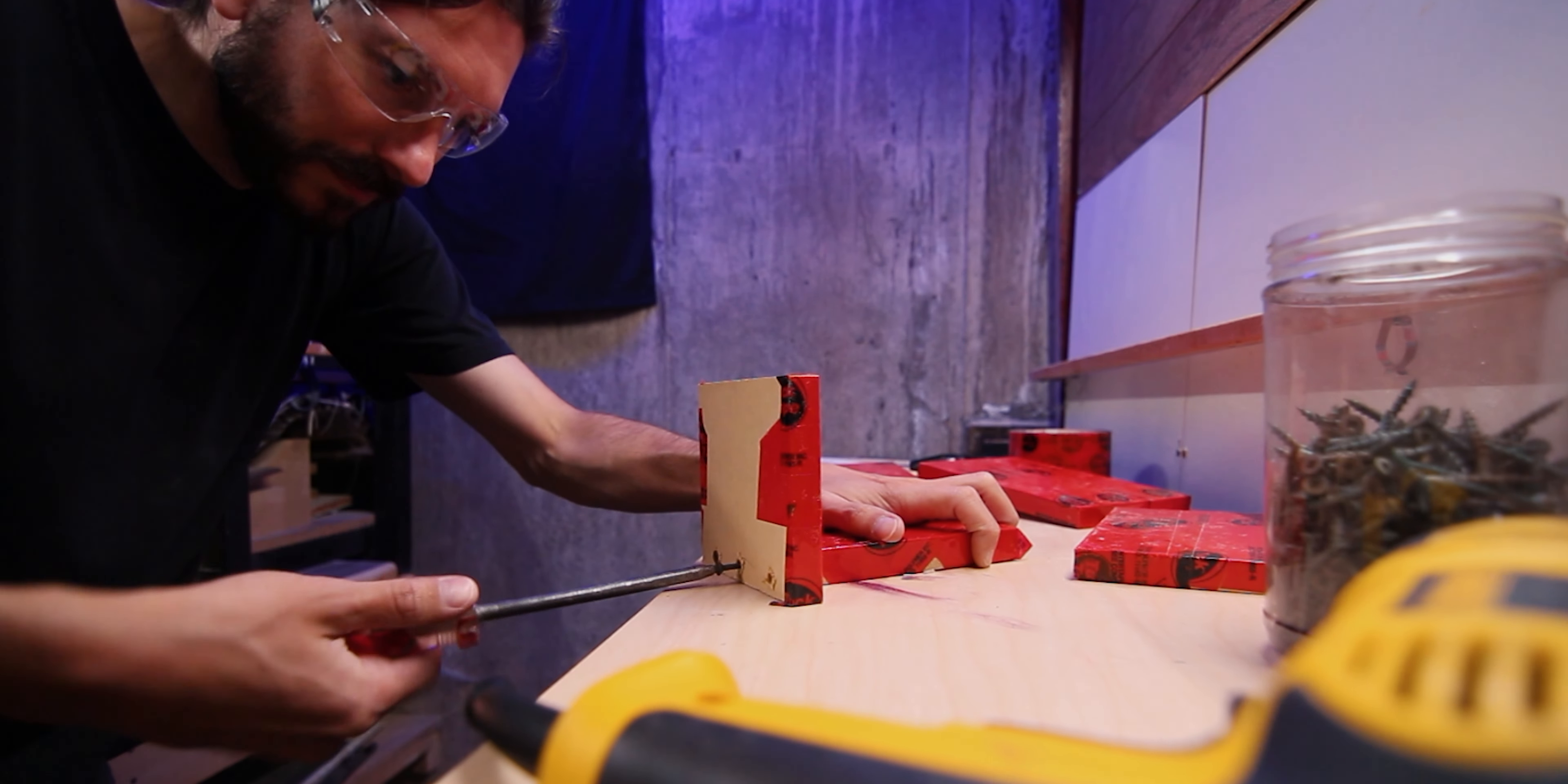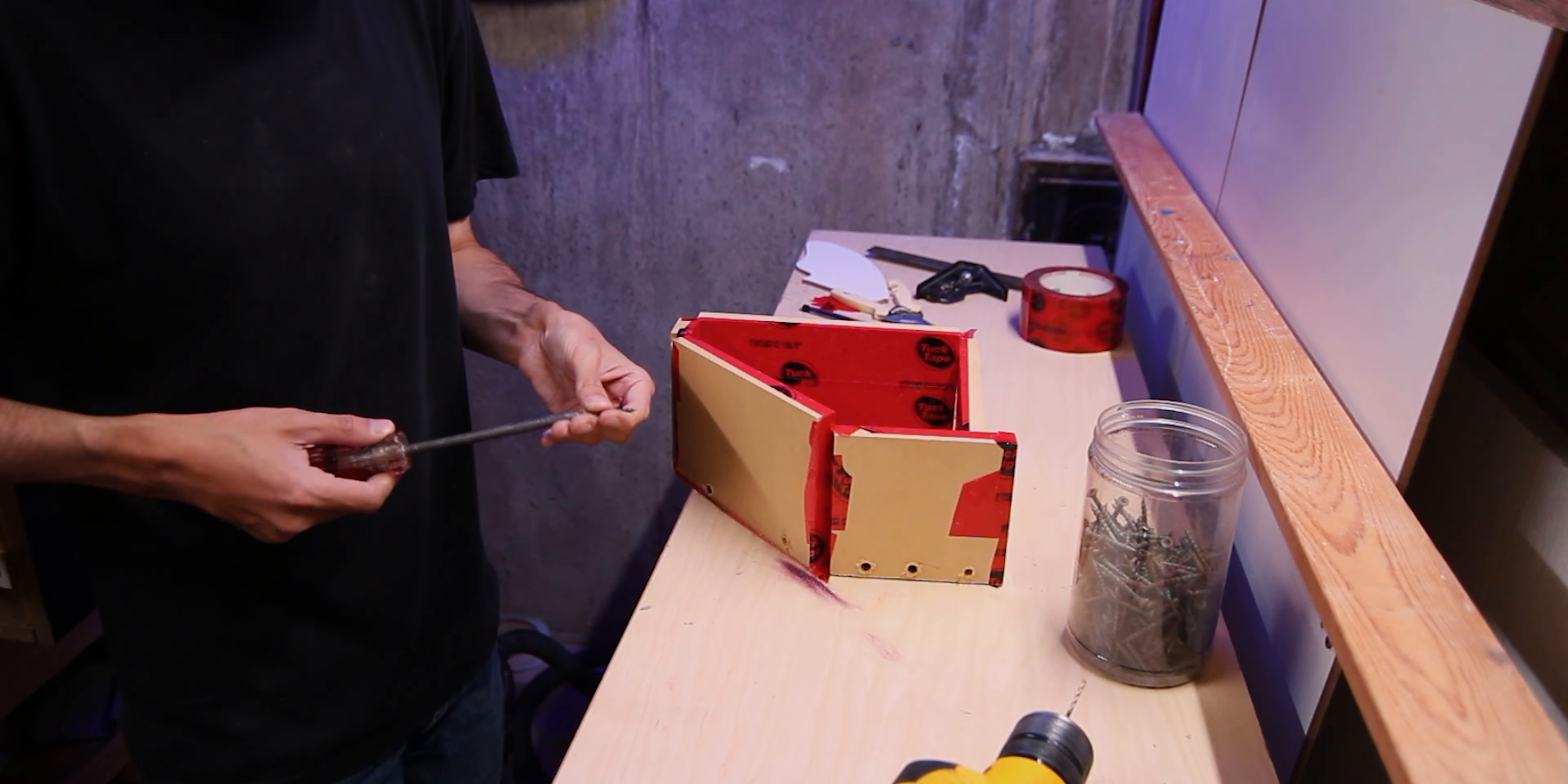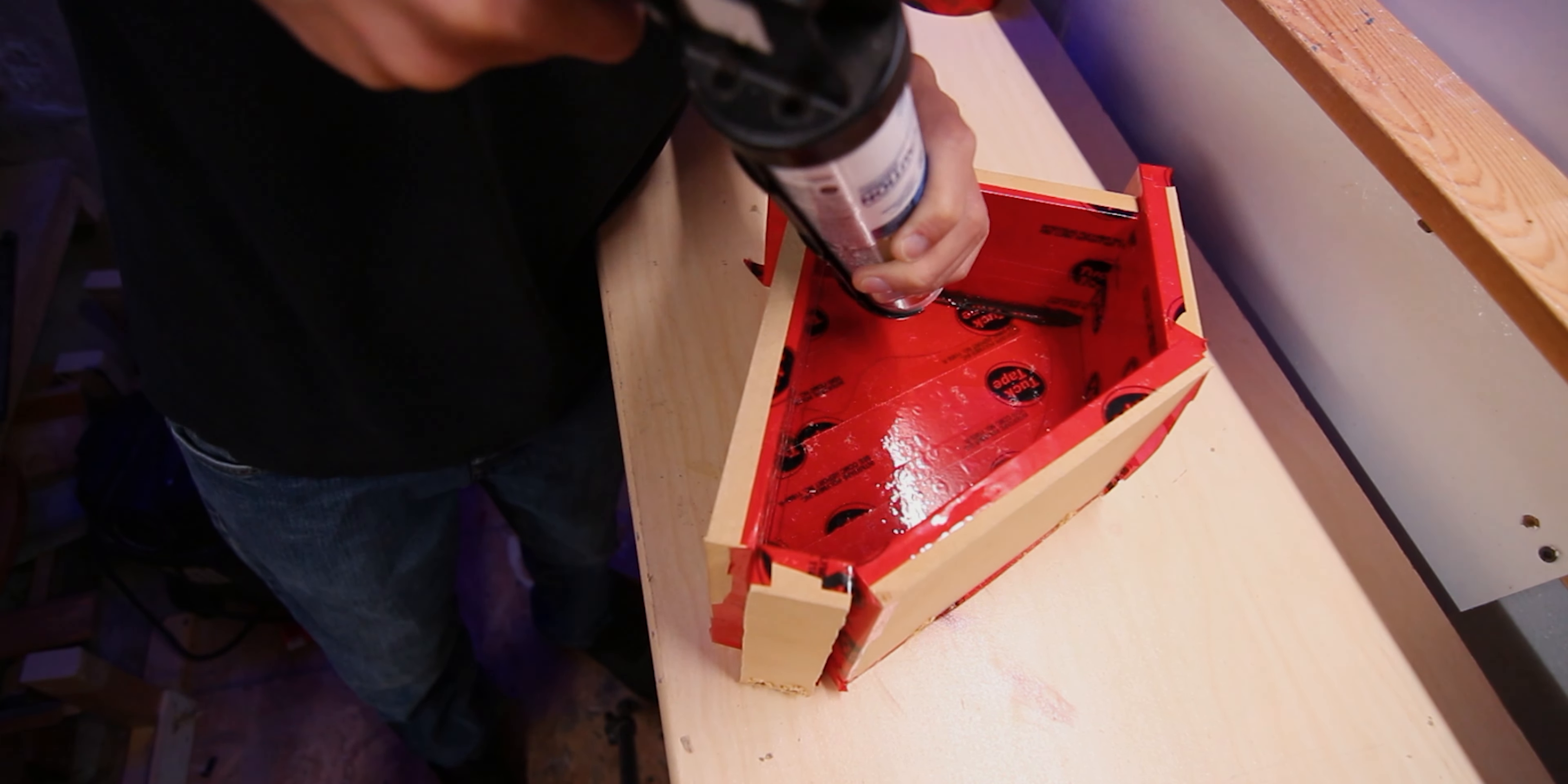With all the mold parts covered in tuck tape, I'll pre-drill where the screws are going to go. This will prevent the MDF from splitting when I screw the mold together.